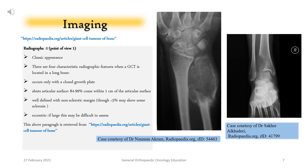Imaging — Radiographs: Classic appearance. There are four characteristic radiographic features when a GCT is located in a long bone, occurring only with a closed growth plate. First, it abuts the articular surface — 84–99% come within 1 cm of the articular surface. Second, it is well-defined with a non-sclerotic margin, though less than 5% may show some sclerosis. Third, it is eccentric, though if large this may be difficult to assess.